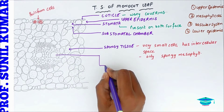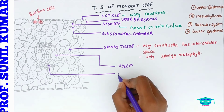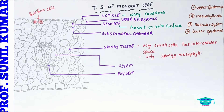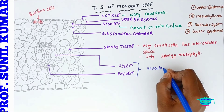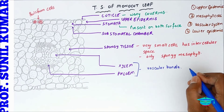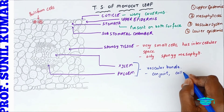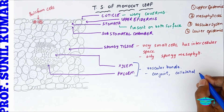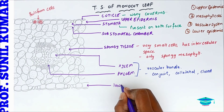This is the xylem, the vascular bundle of the Monocot leaf, and then we have the phloem. Xylem and phloem together make the vascular bundle. In the Monocot leaf, the vascular bundle is conjoint collateral — they are close to each other — and it is closed, meaning there is no cambium present.